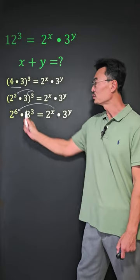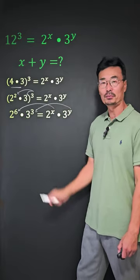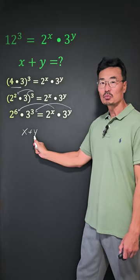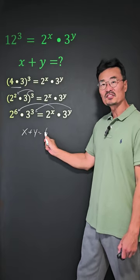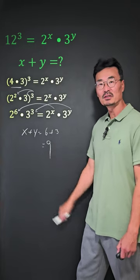That x is going to equal 6, and also the y is going to equal 3, which means that x plus y will equal 6 plus 3, or final answer, 9.